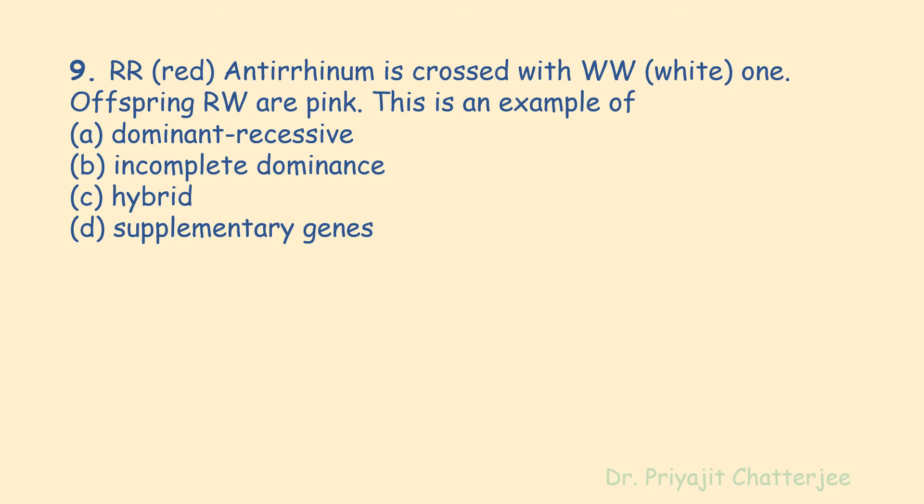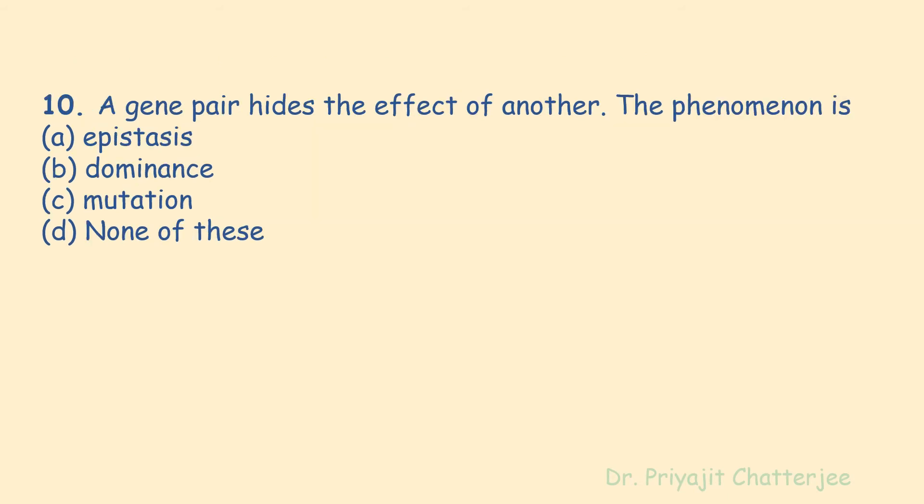The next question: RR (red) snapdragon is crossed with ww (white); one offspring will be Rw which is pink. This is an example of — options are dominant, recessive, incomplete dominance, hybrid, supplementary genes. The correct answer is option B: incomplete dominance. A red-flowered (RR) snapdragon crossed with a white-flowered (ww) snapdragon produces pink (Rw) flowers in the F1 generation — this is called incomplete dominance.